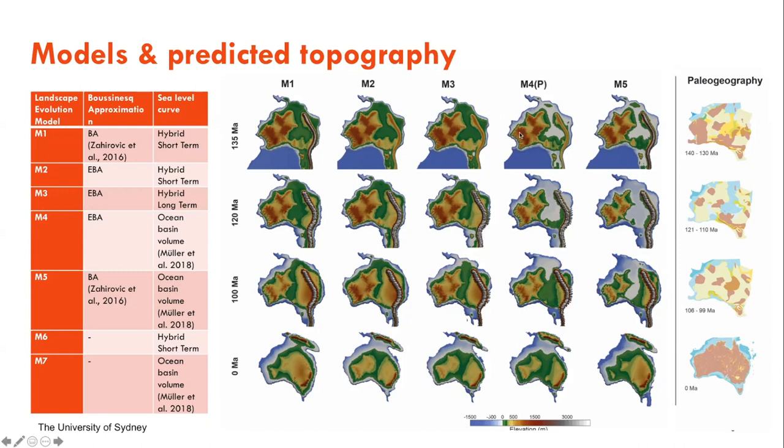Running out of time - our preferred model is M4. This is just a quick snapshot of the paleogeographies through time extracted from the model, showing rather than predicted topography. Our preferred model has a reasonable match to the timing of inundation.